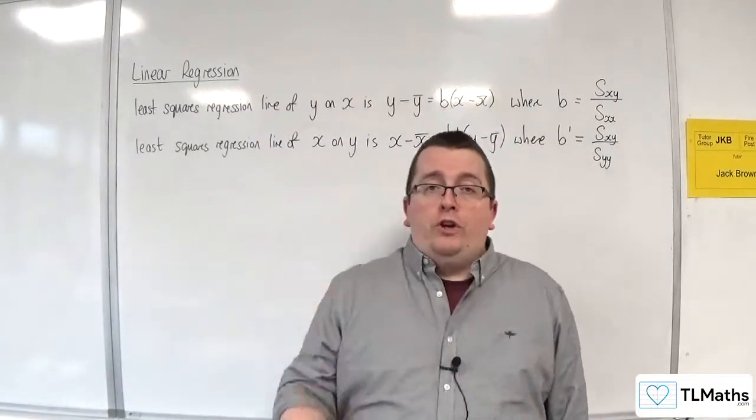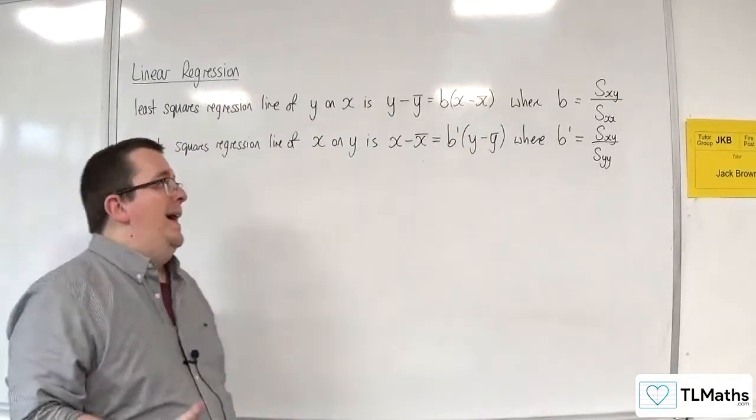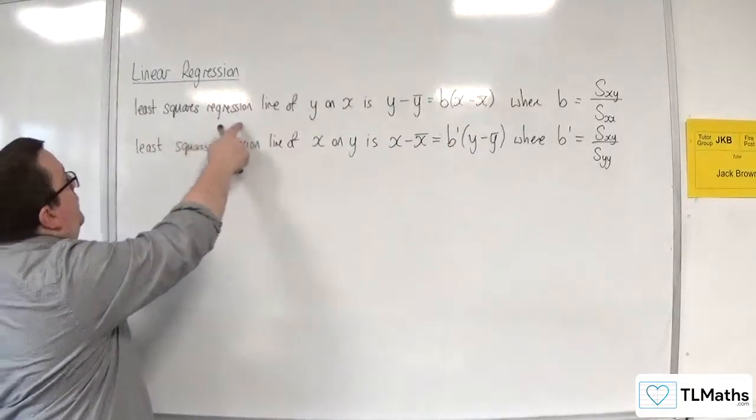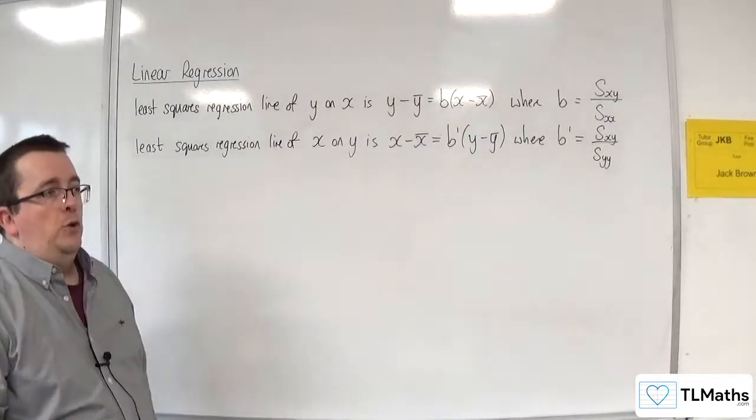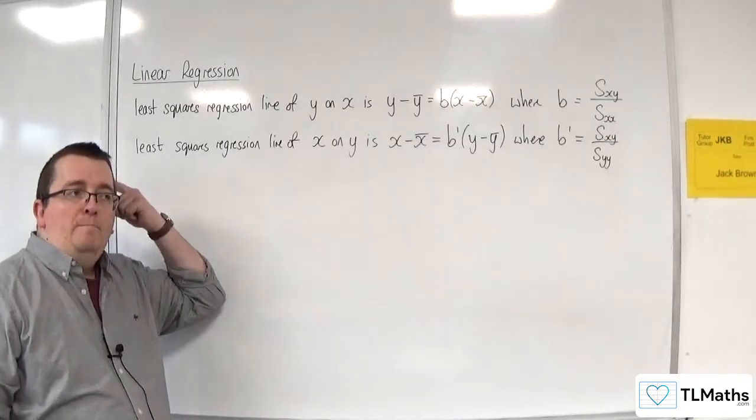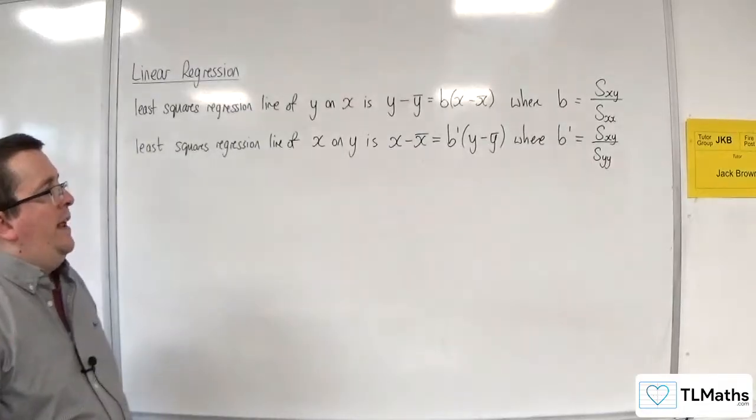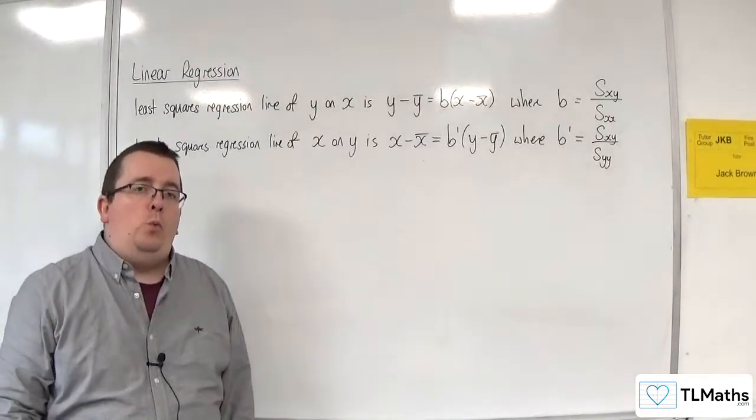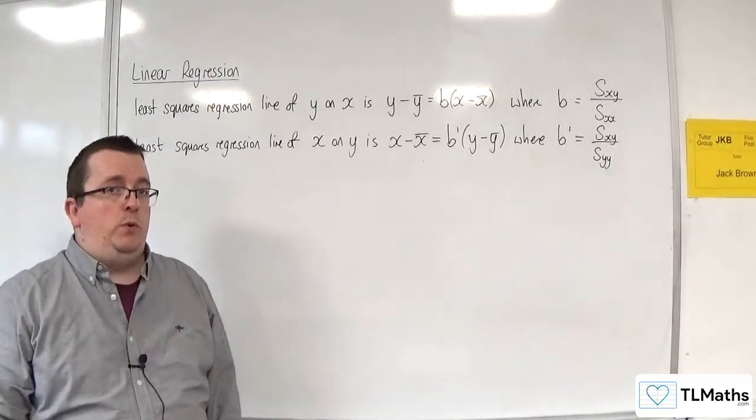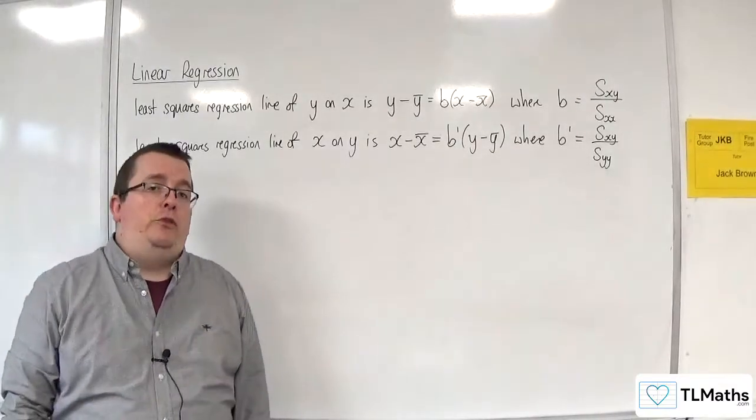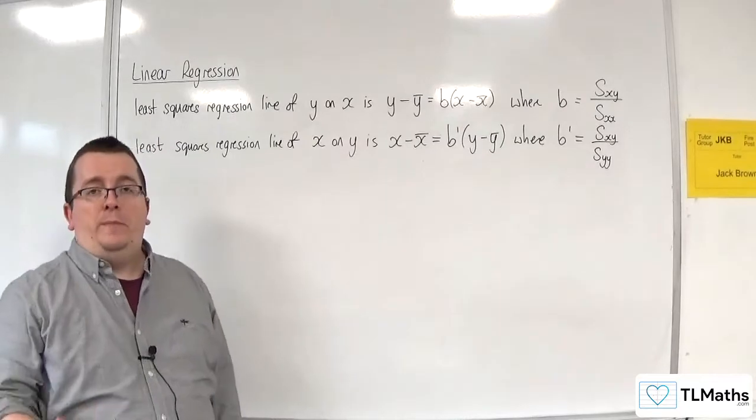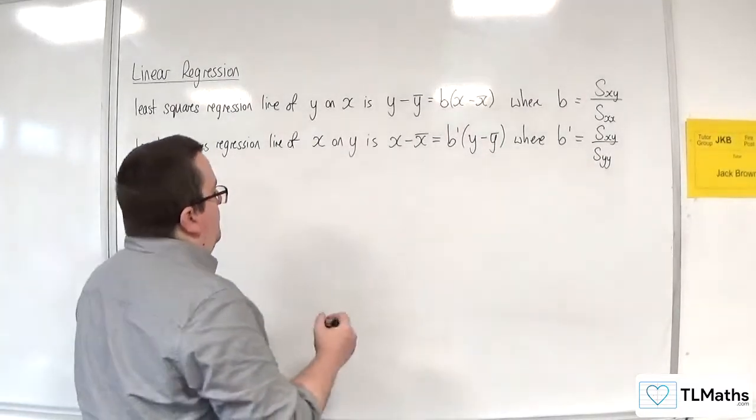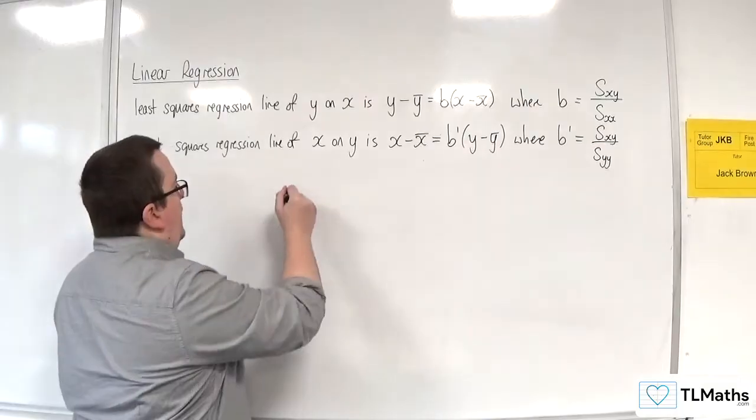A regression line is otherwise referred to as a least squares regression line. The reason we talk about least squares is it's really looking at minimising the squares of the residuals. Now residuals we haven't explained yet—that's coming up in a future video.